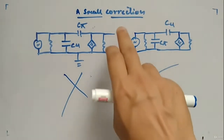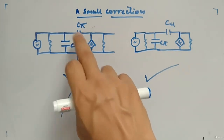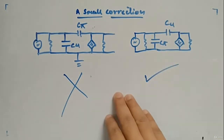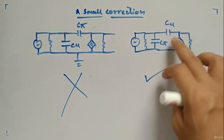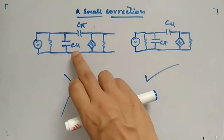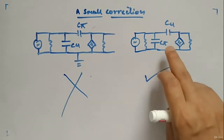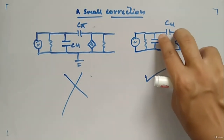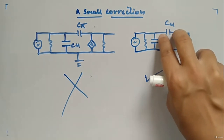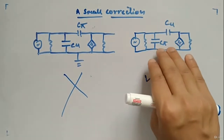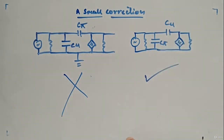There is a small correction I want to make. I mistakenly wrote Cmu between base-emitter and Cpi between base-collector, which is wrong. The correct representation — as seen in most textbooks — is Cpi between base and emitter, and Cmu between base and collector. So whatever Miller analysis you apply, you will apply it to Cmu, not Cpi.